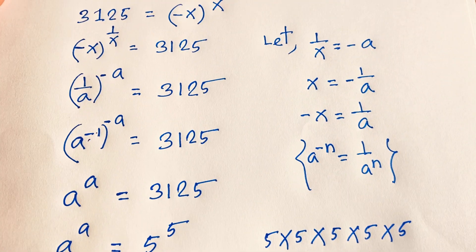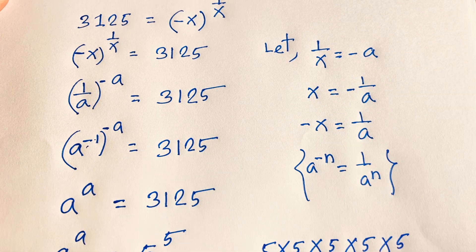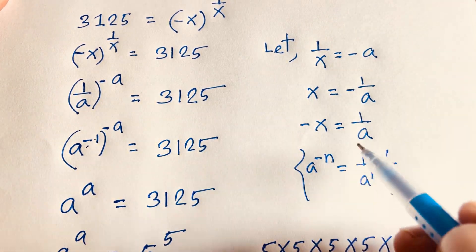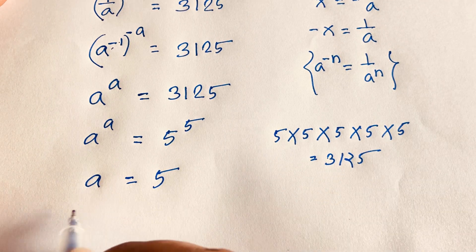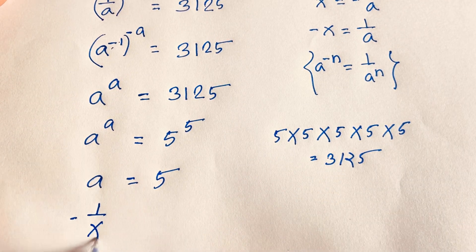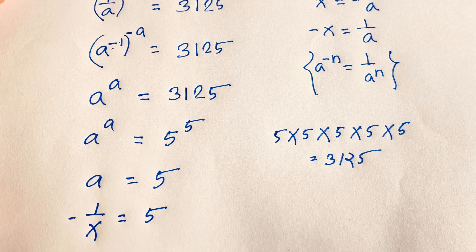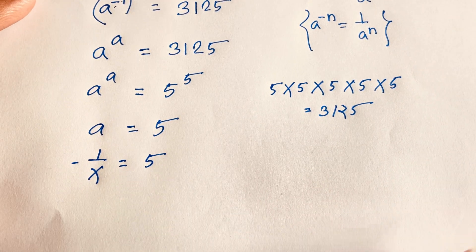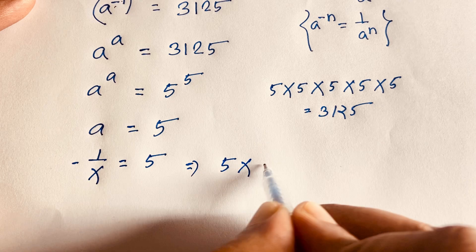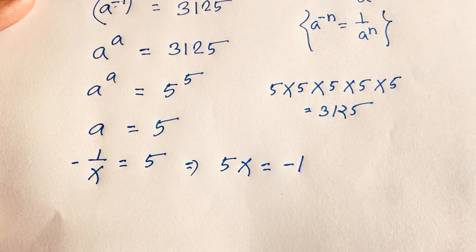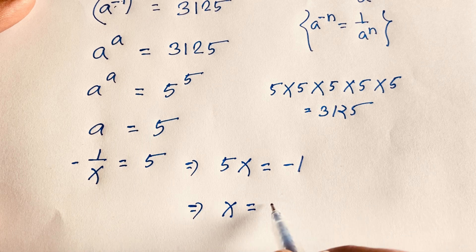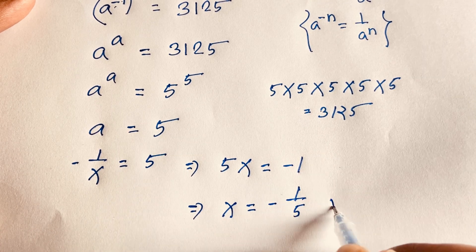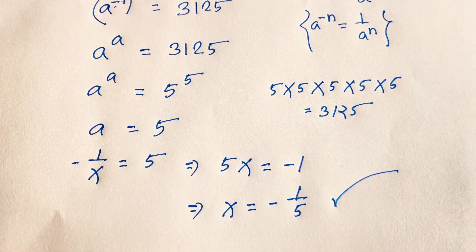Recall that a equals minus 1 over x. So minus 1 over x equals 5. Then 5x equals minus 1, and dividing both sides by 5, we find x equals minus 1 over 5. This is our final answer from Method 1.